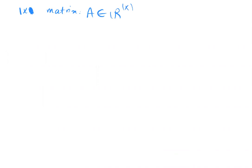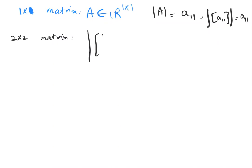Let's try to use this for the initial case: a 1×1 matrix. If A is in ℝ^{1×1}, then det(A) = A_{11}. For a 2×2 matrix, det([[A_{11}, A_{12}],[A_{21}, A_{22}]]) = A_{11}·A_{22} − A_{12}·A_{21}.